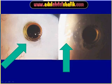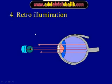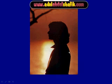Retro illumination means that you are going to illuminate something behind and then examine something anterior. Here you can see this young lady as a silhouette against the illuminated background. This is the case of a keratoplasty.